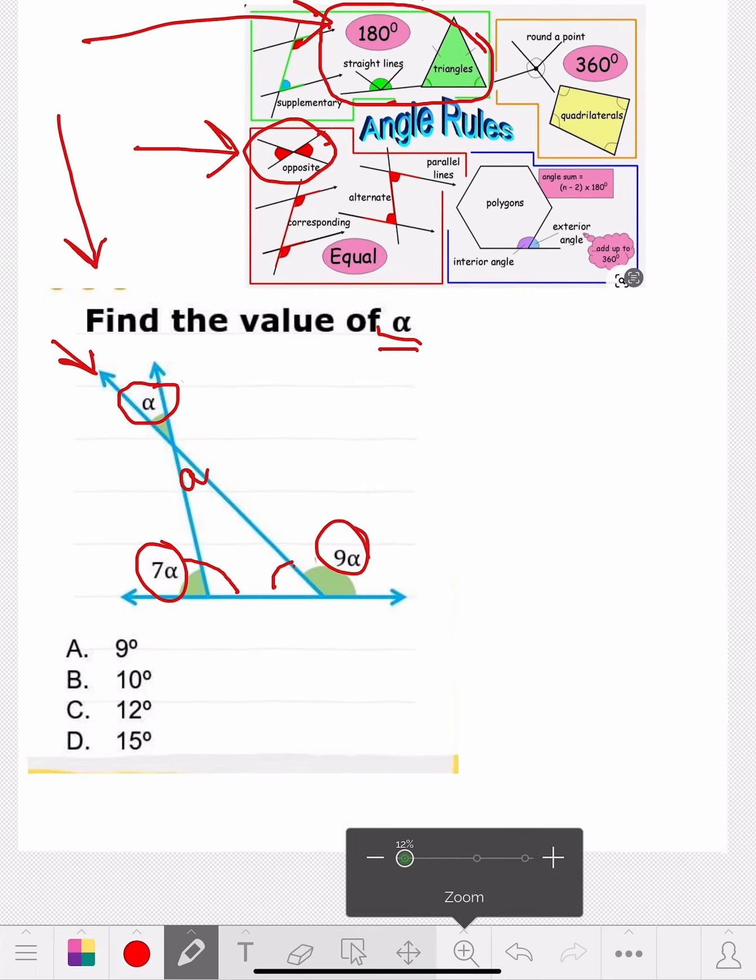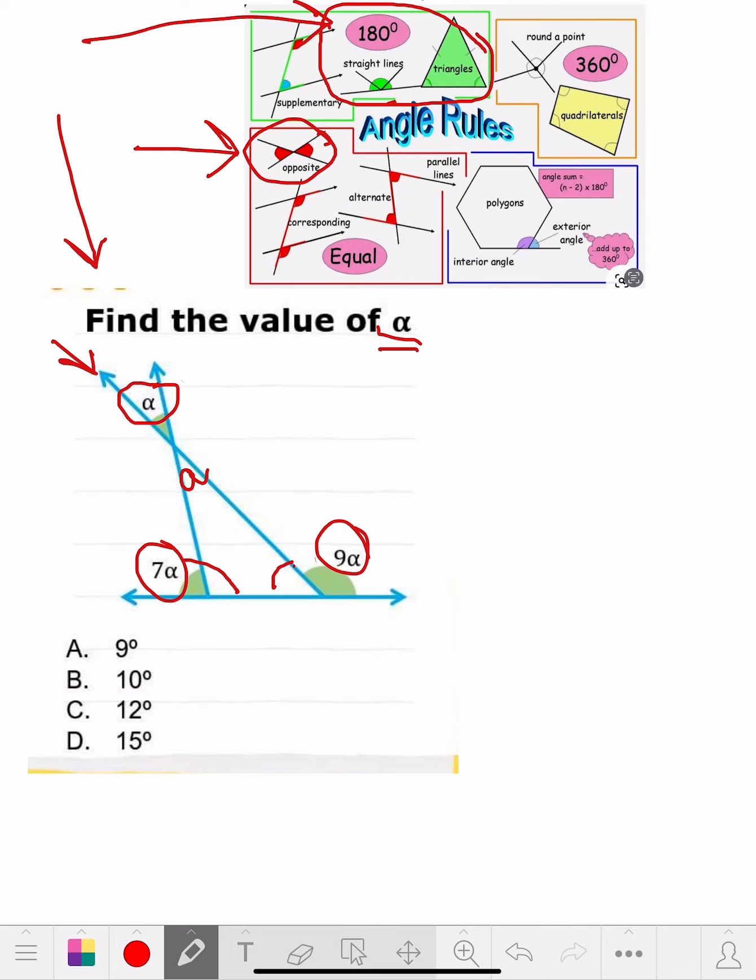The formula we're going to write now is going to be A, which is the top one, because we know this is going to have to hit 180 degrees. So it's going to be A plus, we're adding these together to hit 180, it's 180 minus 7A. That covers that first one right in here. Plus 180 minus 9A. That covers this one over here. Equals 180. We know the whole triangle is going to be 180 degrees.